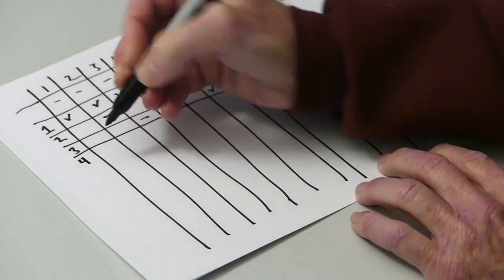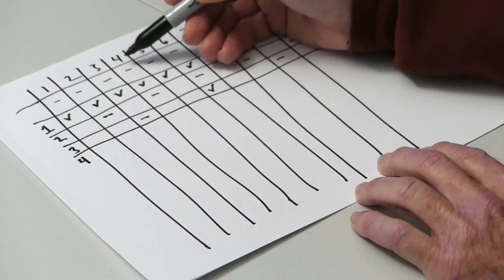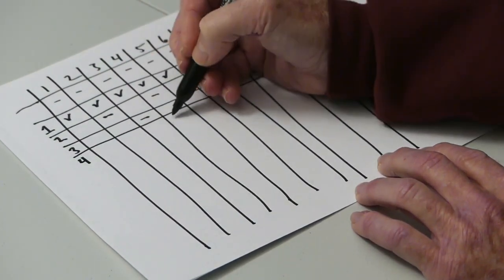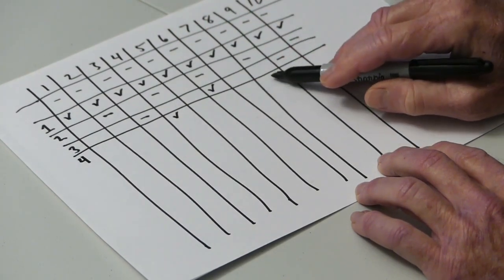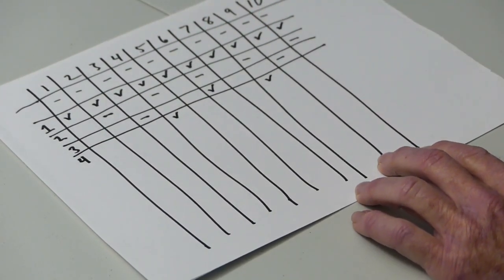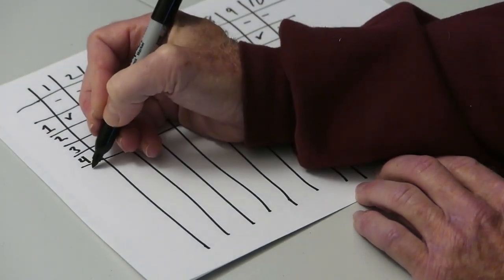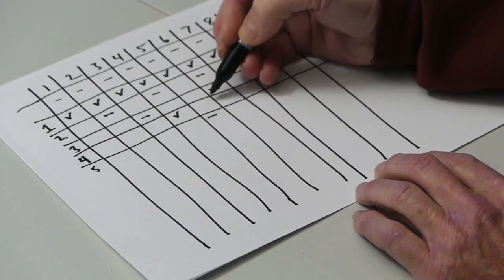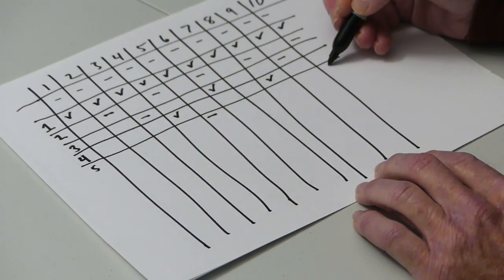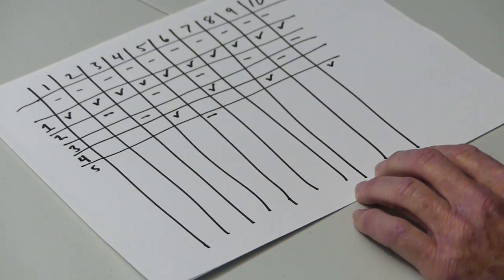Here comes student number 4. Student number 4 starts at locker number 4 and opens it. 4 plus 4 is 8, and that gets opened. Student number 5 starts at locker number 5 and closes it. 5 plus 5 is 10, and opens it.